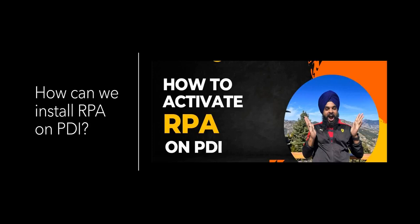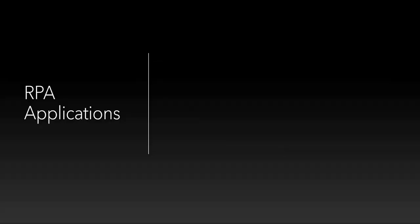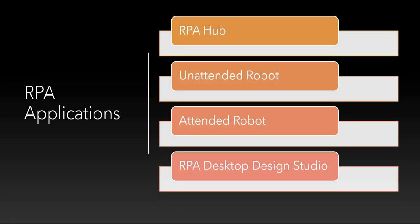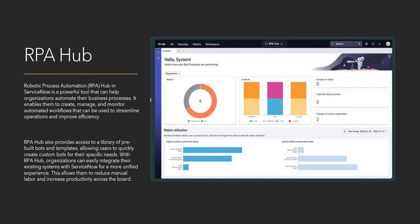I have already created a video on how to install RPA on your personal developer instance — the link is in the description and on the top right corner. There are four applications provided by ServiceNow for RPA: RPA Hub, Unattended Robot, Attended Robot, and RPA Desktop Design Studio. RPA Hub is essentially a dashboard on ServiceNow where you can create, manage, and monitor all your workflows defined in RPA. It also provides built-in robots and templates to quickly start building custom use cases.